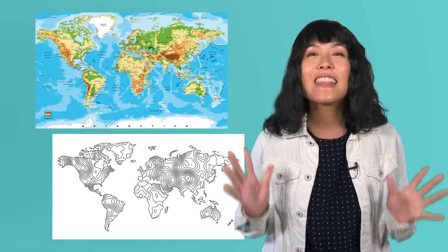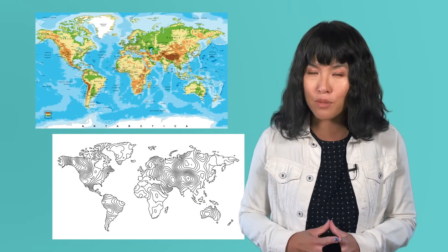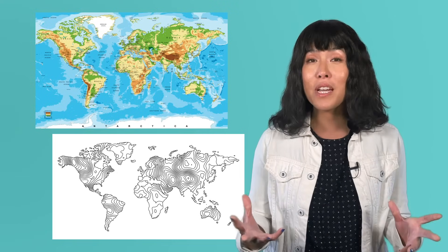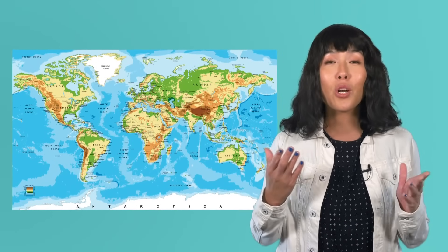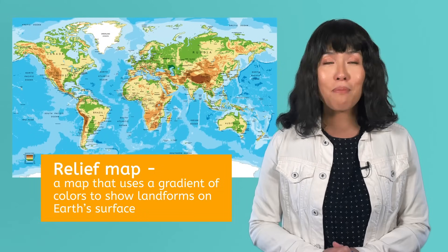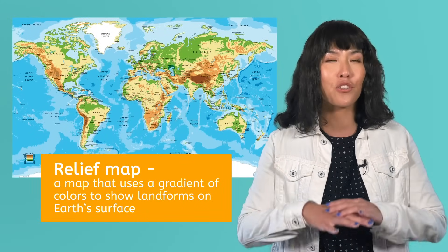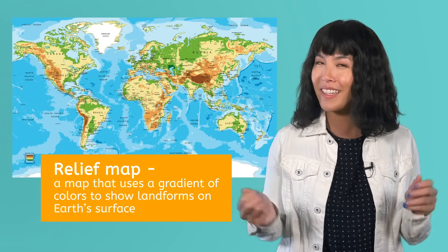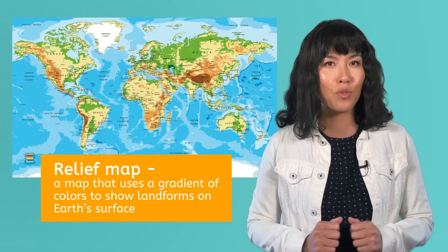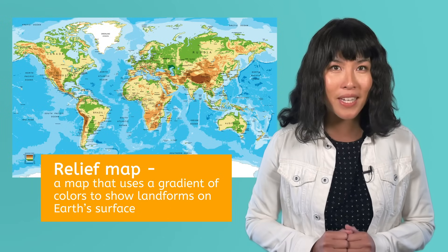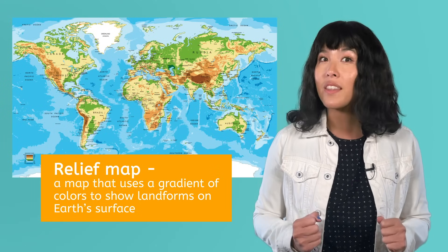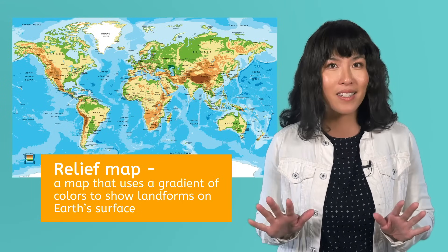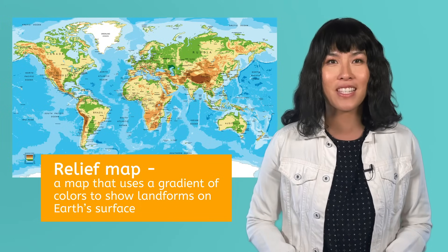That's where relief and topographic maps come in. These are the kinds of maps often used by Earth scientists, since they give us more information about the Earth's surface. Let's start with relief maps. A relief map is a map that uses a gradient of colors to show different landforms on Earth's surface. Take a moment and look at this relief map, or check out the larger copy in your PDF. What patterns on the map do you notice right away? What do you think they mean?